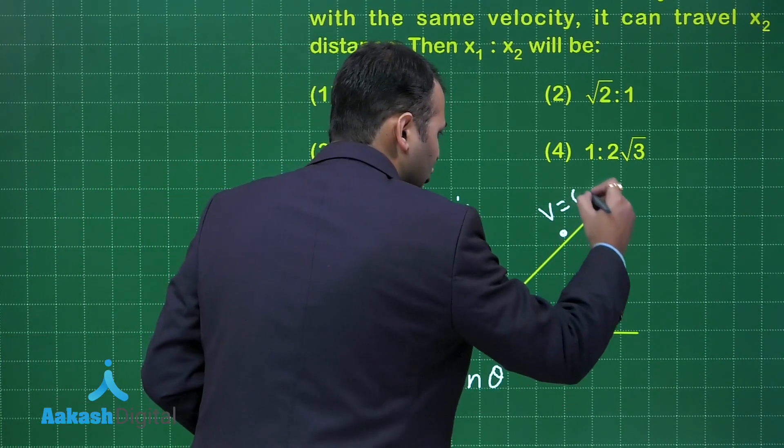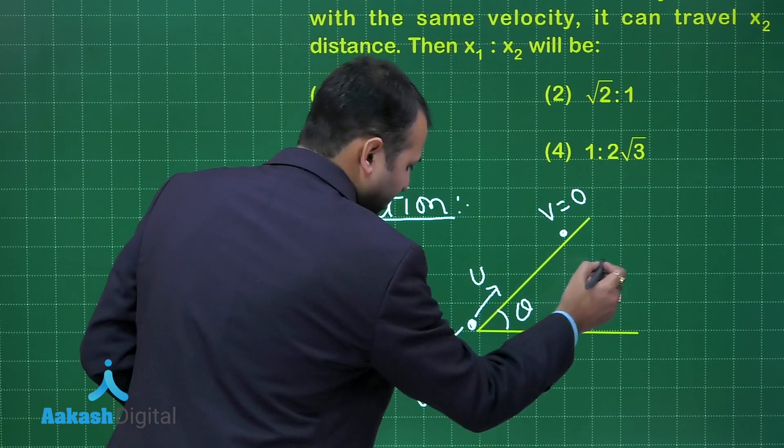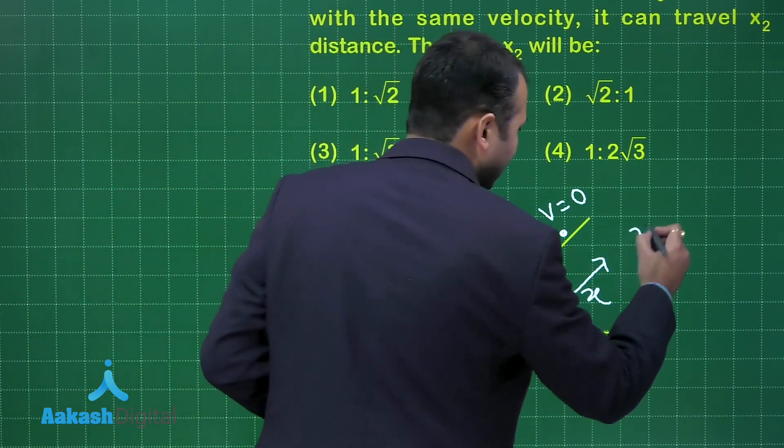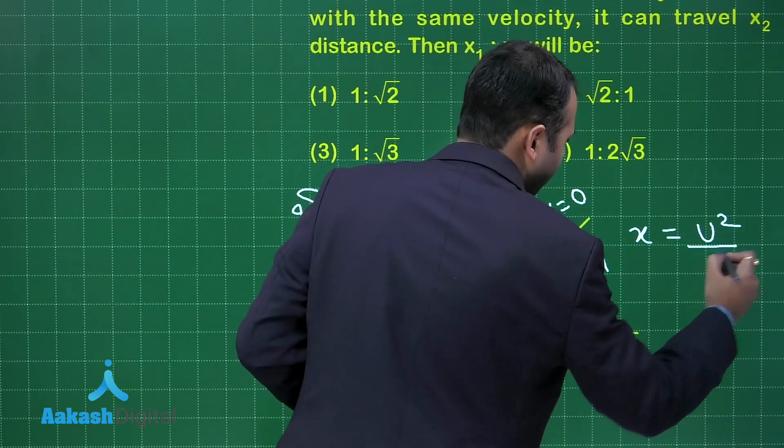That is final velocity would be zero. The distance here from start point to end would be x. So when you put the formula you will get x equals u²/2g sin θ.